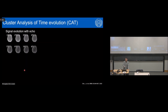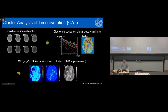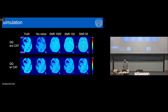To make QQ robust to measurement noise, I developed a new data processing algorithm using artificial intelligence called CAT — Cluster Analysis of Time Evolution. The basic idea is to look at signal evolution with echoes, cluster voxels with similar signal decay patterns together, and set a single parameter value (such as OEF and V) for each cluster. This substantially improves SNR — for instance, if one cluster has 10,000 voxels, SNR effectively improves 100 times (since √10,000 = 100). In simulation of a stroke brain with low OEF areas, QQ with CAT captures low OEF abnormalities at all SNRs, whereas QQ without CAT does not.